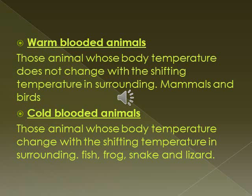Seals also have a thick layer of fat and a thin coat of fur to keep them warm. Cold blooded animals like fish, frog, snake, and lizard hibernate — they sleep in winter. Cold blooded animals are those whose body temperature changes with the shifting temperature in their surroundings. They cannot maintain their body temperature.